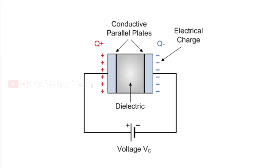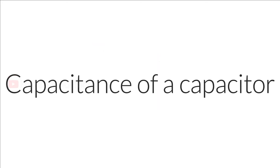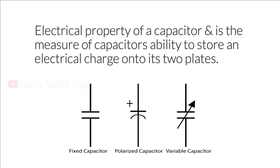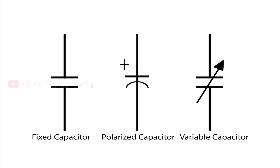Capacitance is the electrical property of a capacitor and it is the measure of a capacitor's ability to store an electric charge on its two plates. The unit of capacitance is the farad. You can see three symbols here — for fixed type capacitors we use the first symbol, some capacitors have polarity so in those cases we use the second one, and if it's a variable type the capacitance value can be changed, denoted by the last symbol.